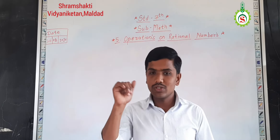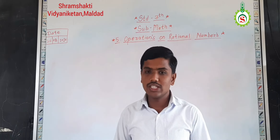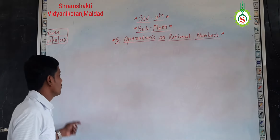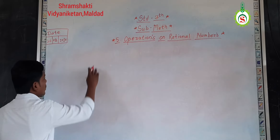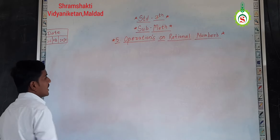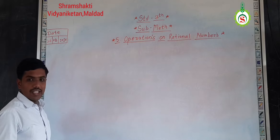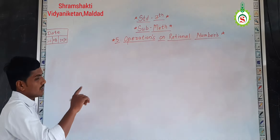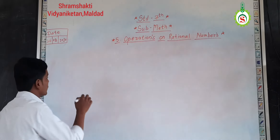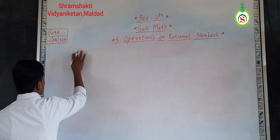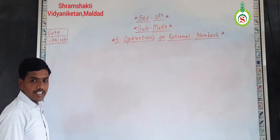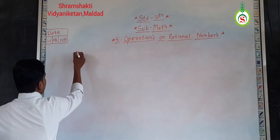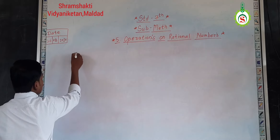So, those two topics we are going to see in today's lecture. For that reason, we will again take one example of addition of rational number and one example of subtraction of rational number. So, if I want to take any rational number — rational number means one is numerator,